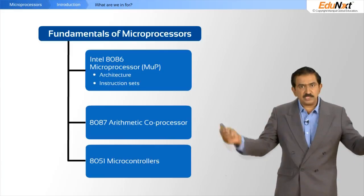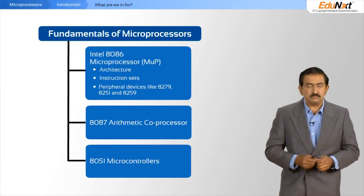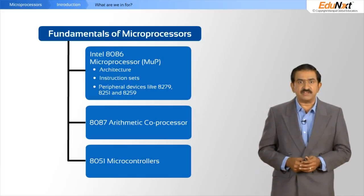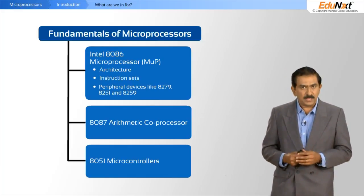I will also talk about various peripheral devices that you need to work with the 8086 effectively — peripheral devices like the 8279, the 8251, the 8259, and so on. What I will not cover are facts, figures, and things that are fairly simple to understand and do not need any conceptual explanation. Those you will find in any book or any website — that is not what I am going to be touching upon.